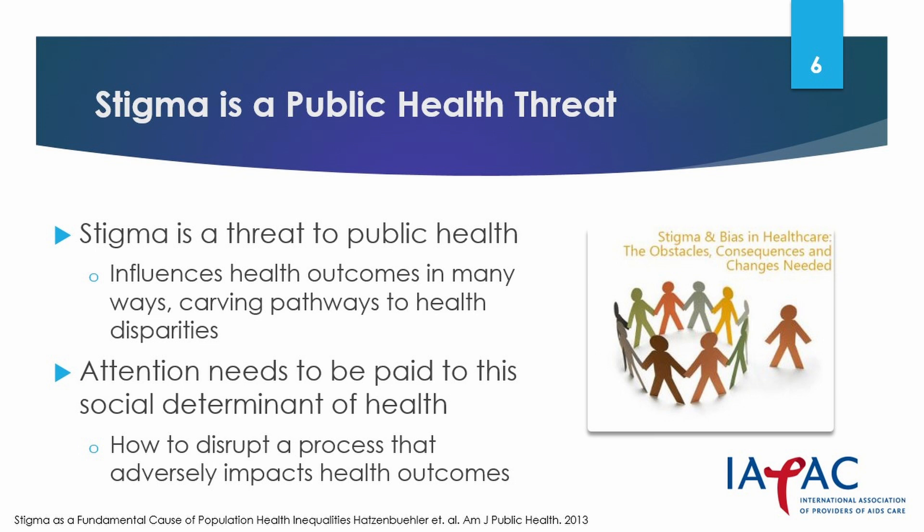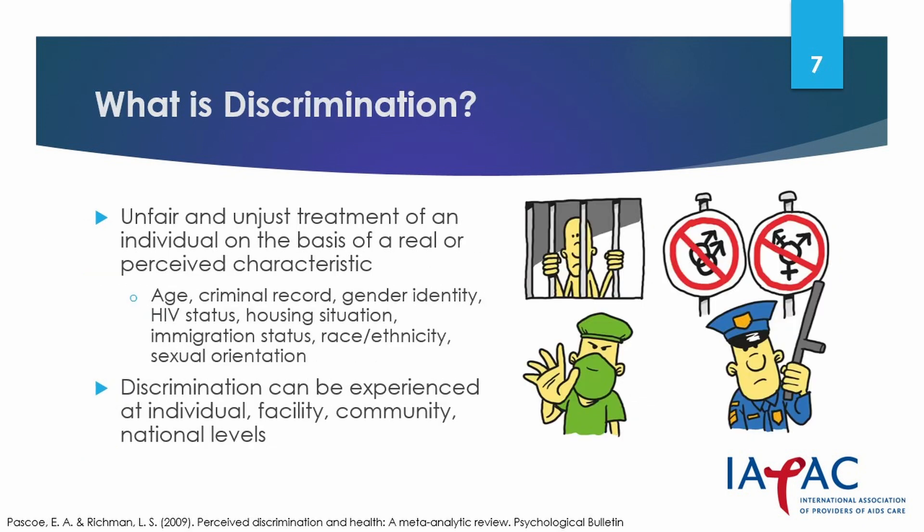The other determinants of health include income, poverty, social protection, education, and food and housing insecurity. Discrimination is defined as the unfair and unjust treatment of individuals on the basis of a real or perceived characteristic, such as HIV status, age, race, ethnicity, gender identity, sexual orientation, housing situation, immigration status, or criminal record.